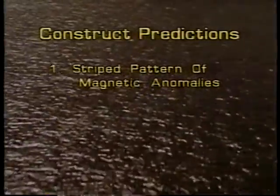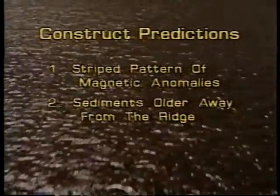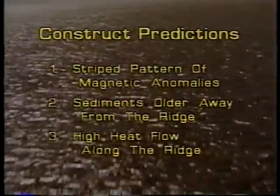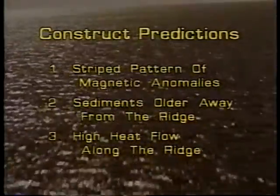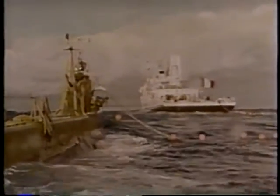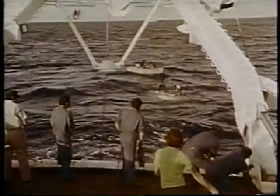Remember that seafloor spreading is a construct that made these predictions: there should be a striped pattern of magnetic anomalies on either side of the mid-ocean rift; sediments should increase in age moving away from the ridge in both directions; and there should be a relatively high level of heat flow along the ridge. The acceptability of the seafloor spreading theory was greatly enhanced by these three successful predictions. Increased knowledge and advanced technology may further confirm the theory of seafloor spreading, or perhaps additional data will emerge leading to an entirely new, more useful construct.